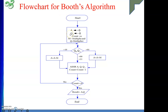That position is called Q minus one. The LSB of Q is Q zero, and Q minus one represents the bit to the right of the LSB in the multiplier — we are taking it as zero. Register A holds the value zero, with n zeros, where n is the number of bits in the input.